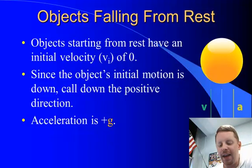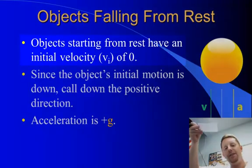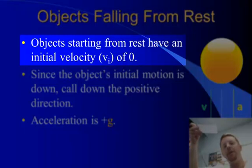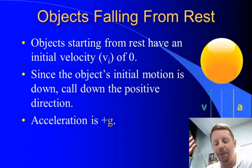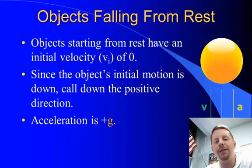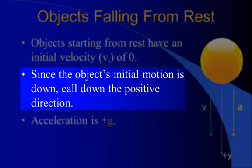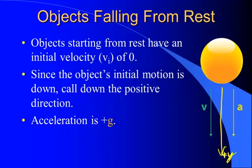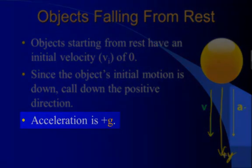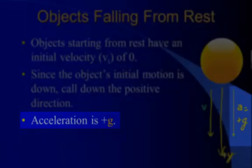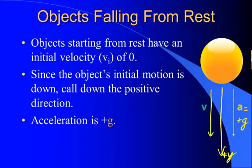If we're talking about objects falling from rest — if we drop something — it starts with an initial velocity of zero. Once we let it go, it will accelerate and its speed will increase on its way down, but its initial velocity vi will be zero. We're going to call the direction of the object's initial motion positive. So since the object starts by falling, we'll call down the positive direction. That means the object's velocity is downward — that'll be positive — and since acceleration also points down, our acceleration a is going to equal positive g.